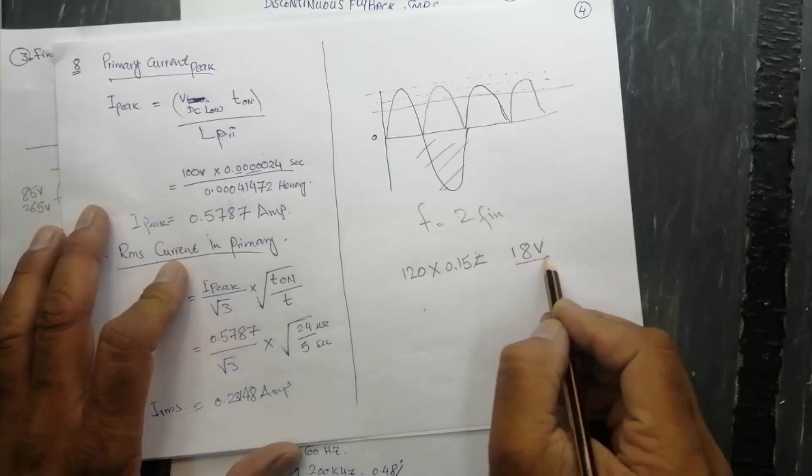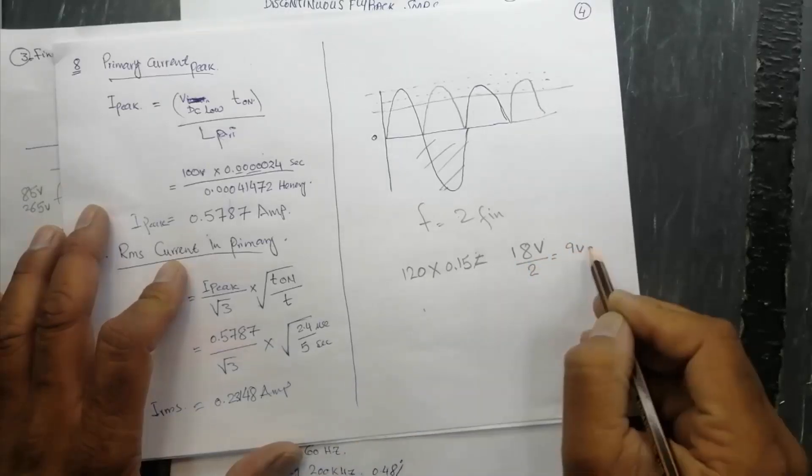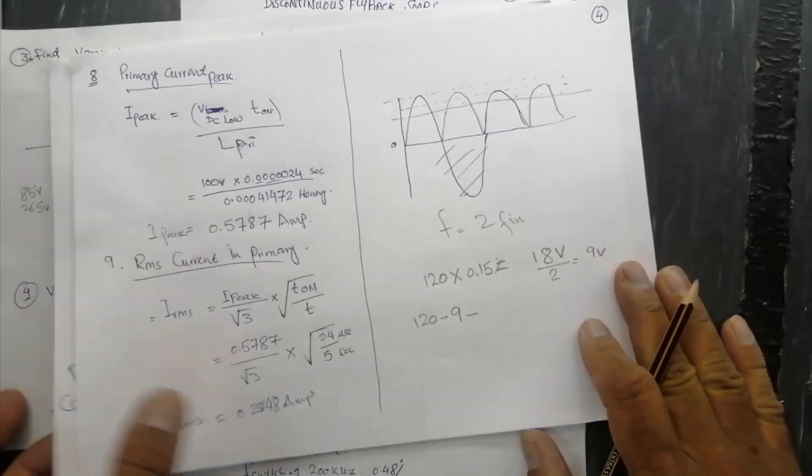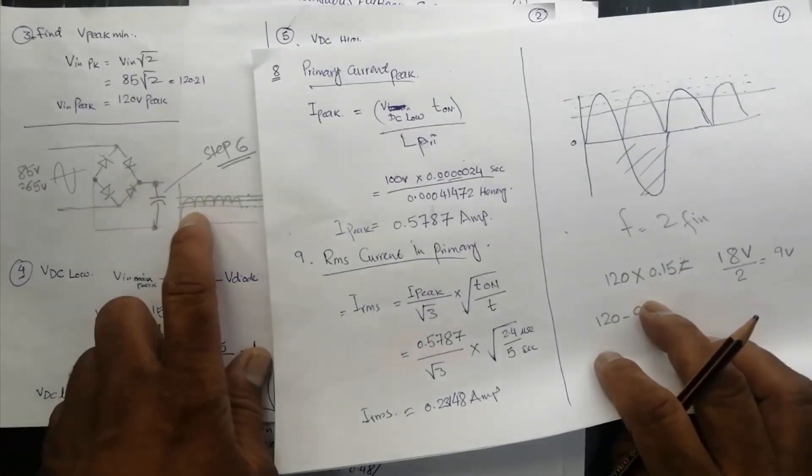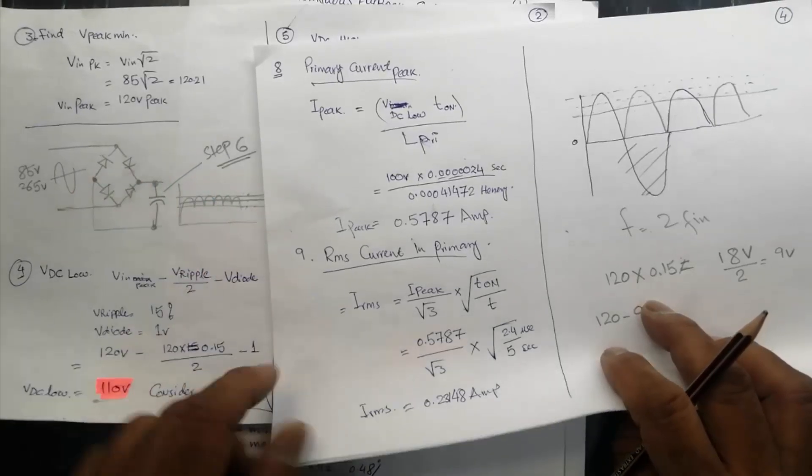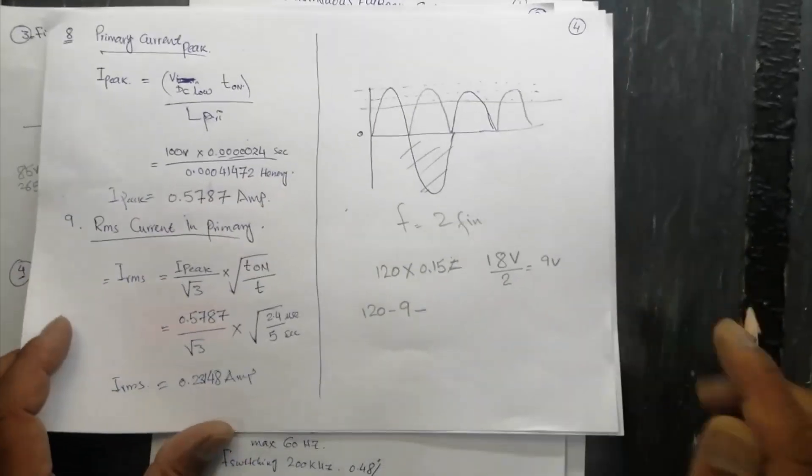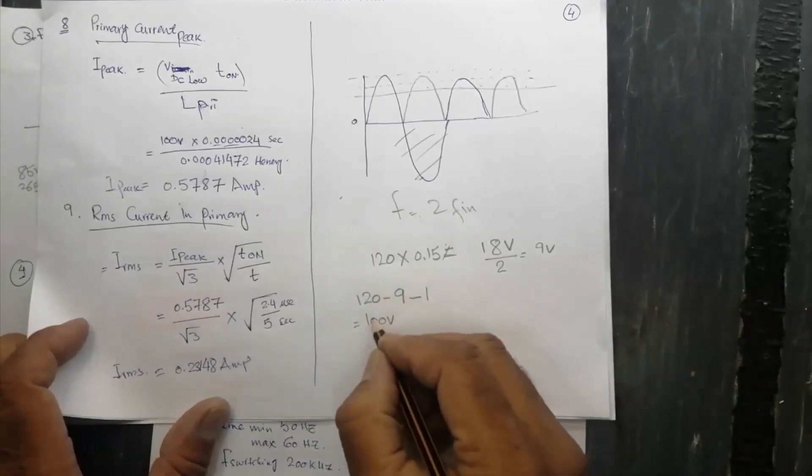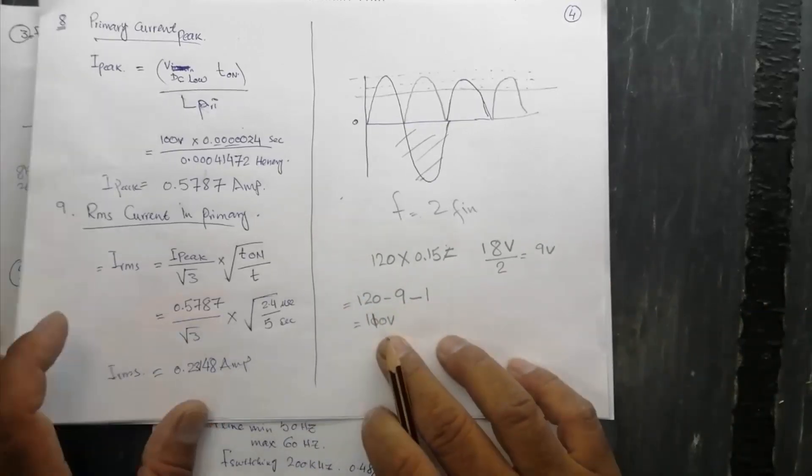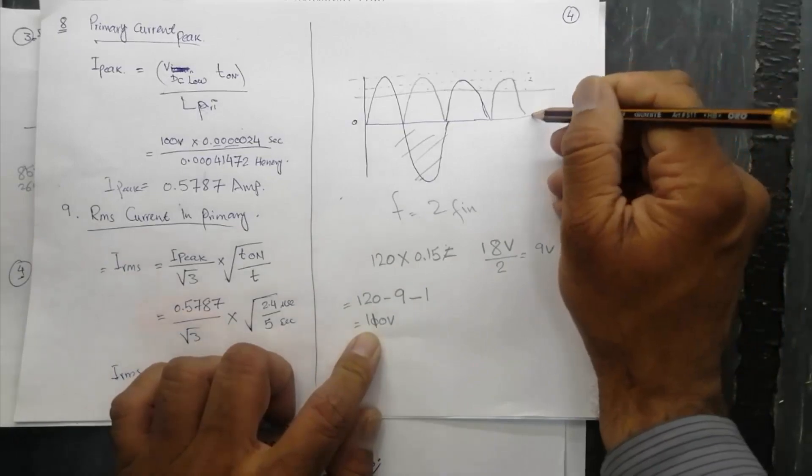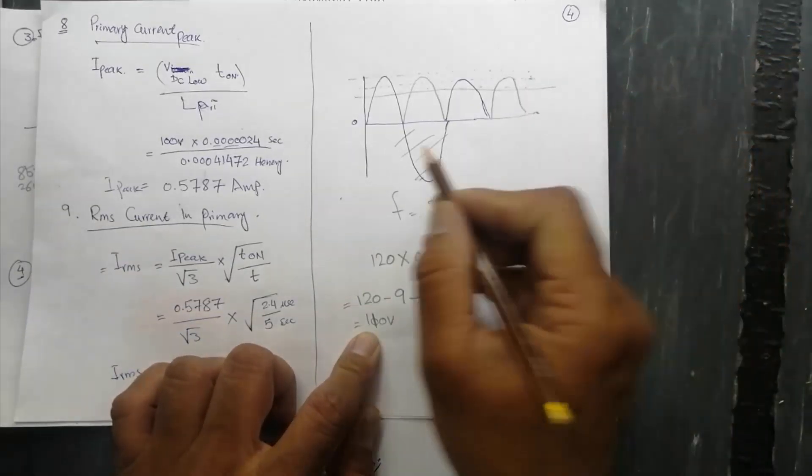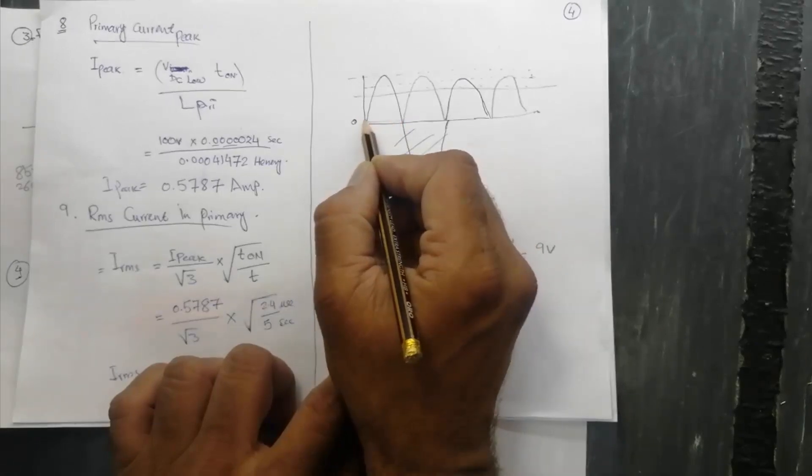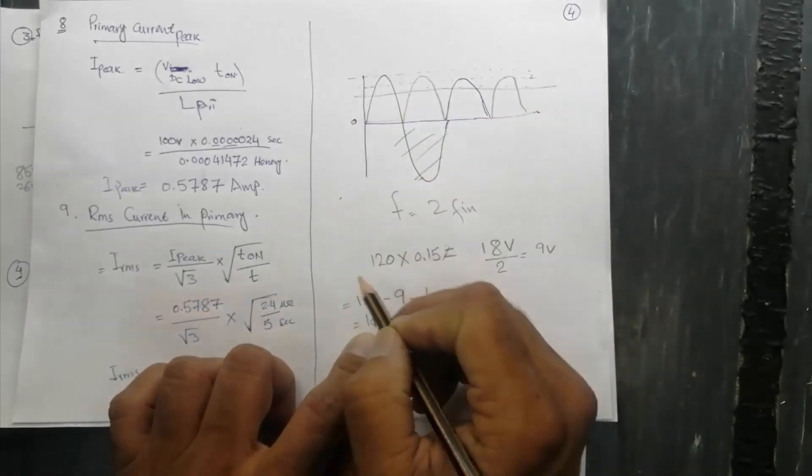We will calculate the value of capacitance. The level we will select, we will divide it by two, it is 9 volt. 120 minus 9 and minus 1 volt for both diodes in series, because in one half cycle we face two diodes in series and the other two diodes in the next half cycle. So it will become 110 volt. This is the midpoint from zero volt to this point.